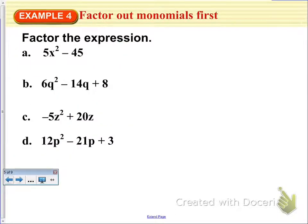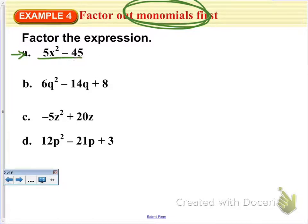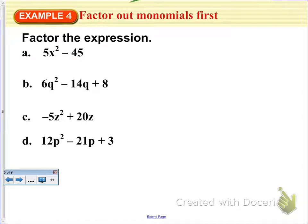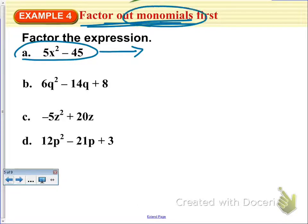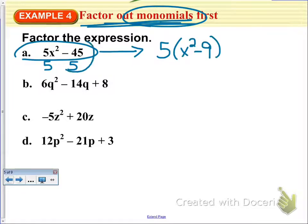The last set of examples covers when we do need to factor out the greatest common monomial. In letter A, we've got 5x squared minus 45. The common factor is 5, so we factor a 5 out of each term and we are left with 5 times x squared minus 9. We divide 45 by 5 to get 9.